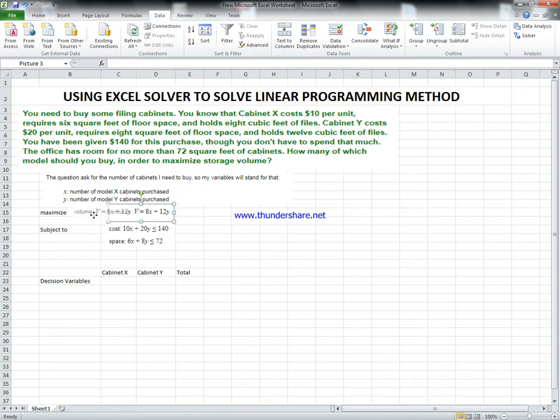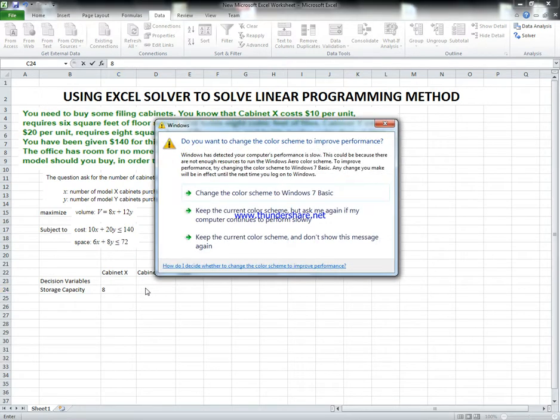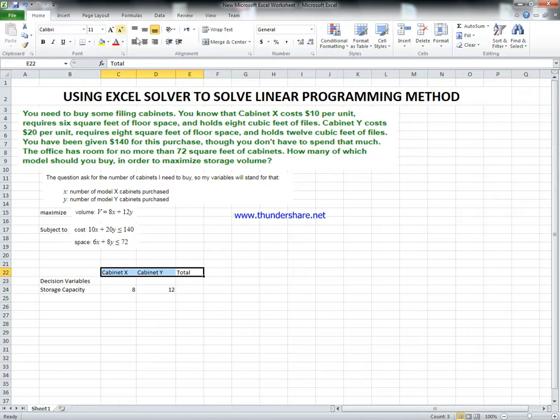I'm going to move this one here, and contributions or storage, which is my capacity. This is the variable - the number of cabinets X and Y I should buy. Contribution or the storage capacity - same as the objective. So we have 8 which stands for X, 12, and the total.